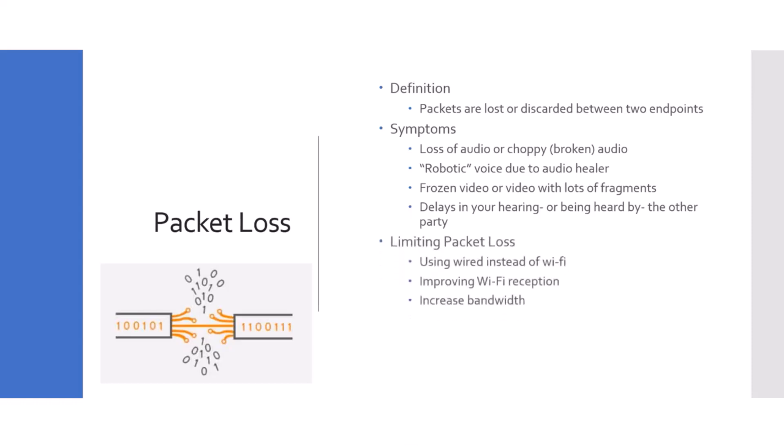How do we fix packet loss — how do you limit it? Using wired instead of Wi-Fi, improving Wi-Fi reception, and increasing bandwidth are some suggestions to limit packet loss. Increasing bandwidth plus doing the right routing according to Microsoft 365 connectivity principles also plays an important part in limiting packet loss.